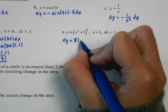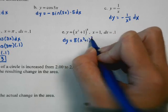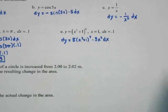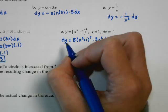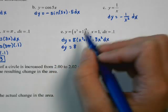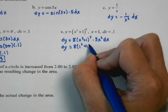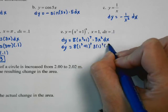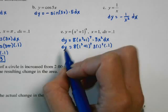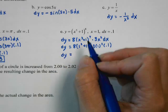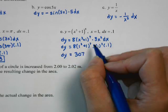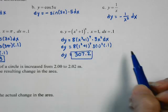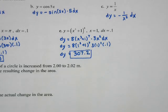dy equals 8 times (x cubed plus 1) to the 7th times 3x squared dx. We plug in our specific values and our dx is 0.1. Typing that into the calculator, we get 307.2, so that's a pretty big change in y over 0.1.